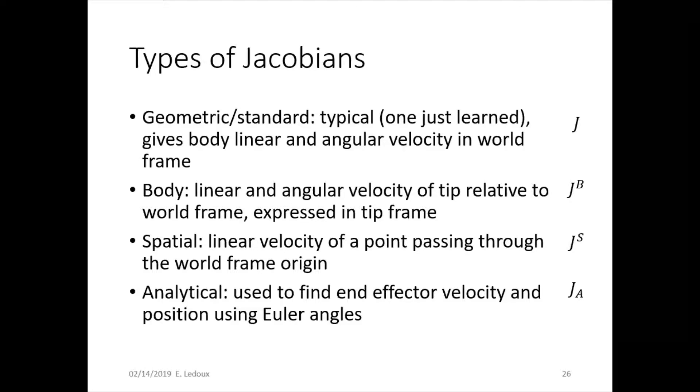The spatial Jacobian is a linear velocity of a point passing through the world frame origin. And the analytical Jacobian is used to find end effector velocity and position using Euler angles. Mainly we will stick to the standard Jacobian, but you may see some of these other terms used occasionally.